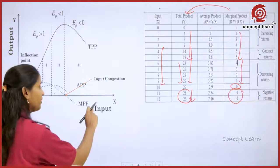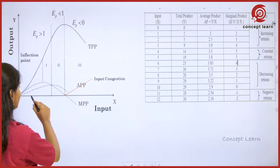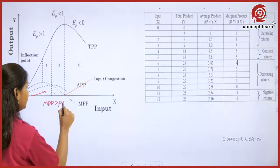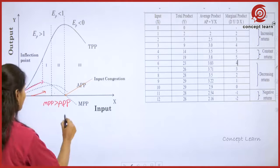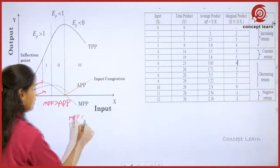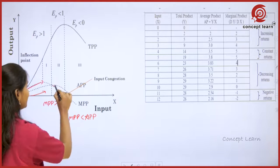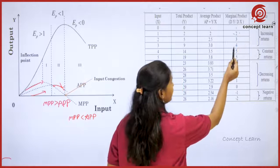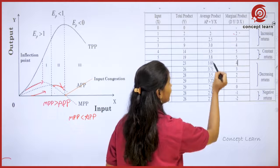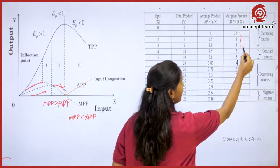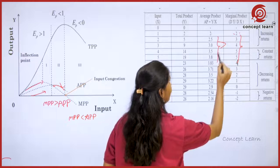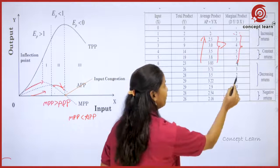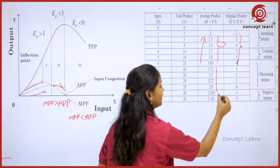Now we will understand how MPP and APP are related. When MPP is greater than APP, APP increases. For example: MPP of 4 is greater than APP of 3; MPP of 5 is greater than APP of 3.5. Until and unless MPP is greater than APP, APP increases. When MPP is less than APP, APP starts declining.